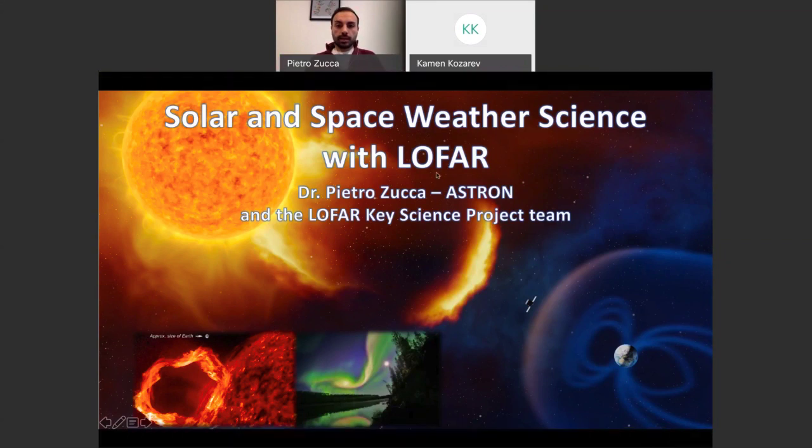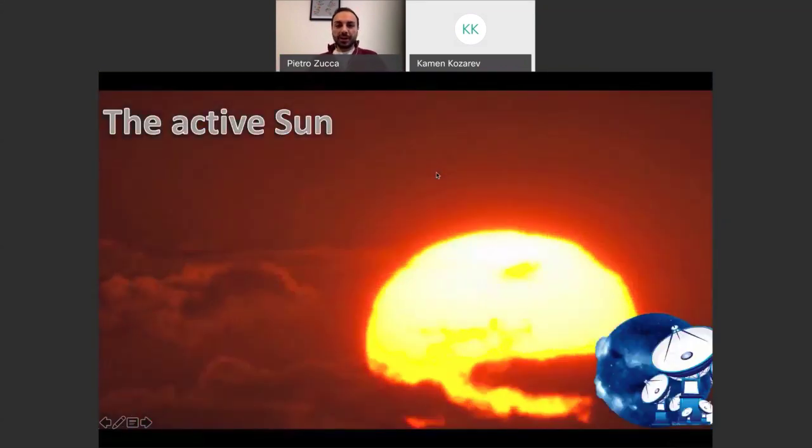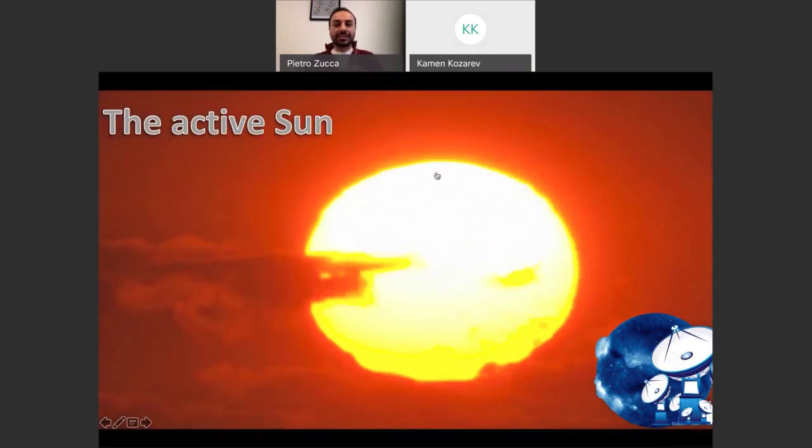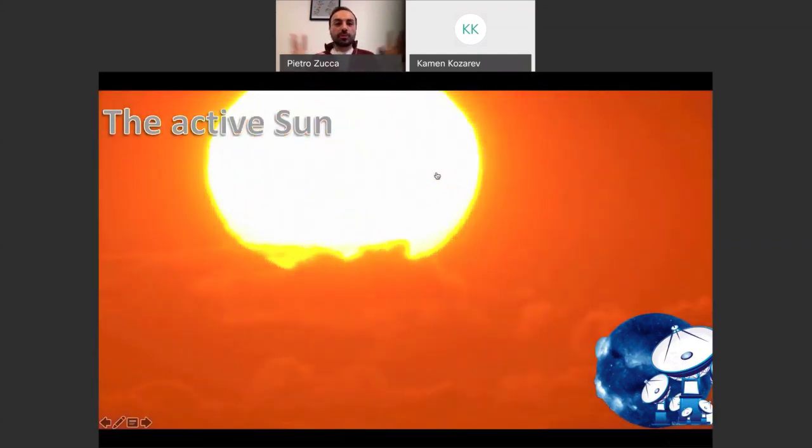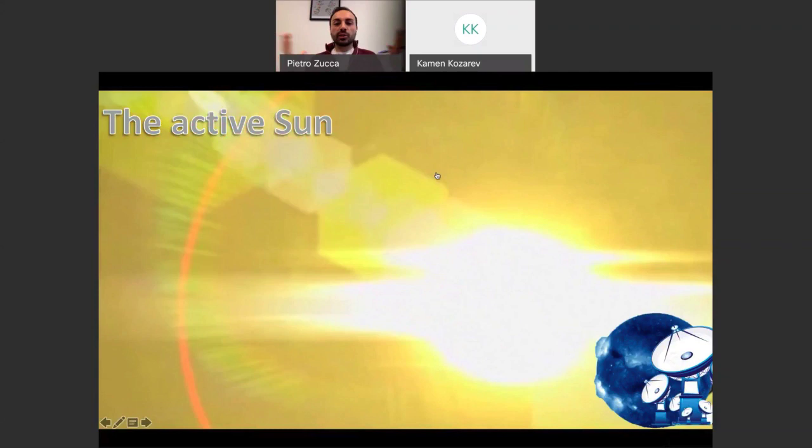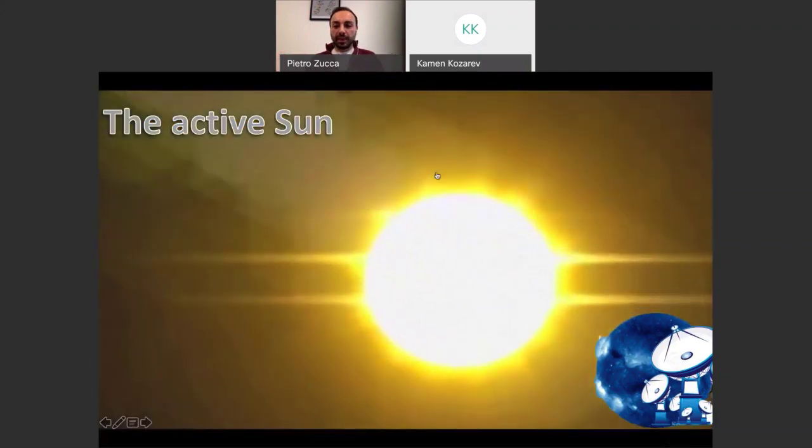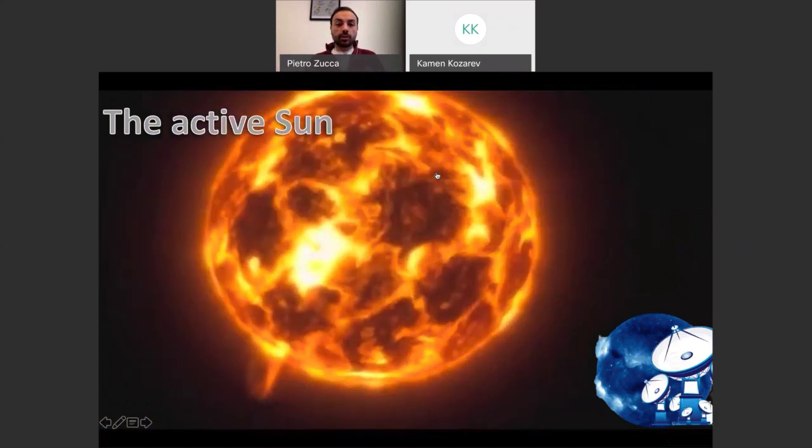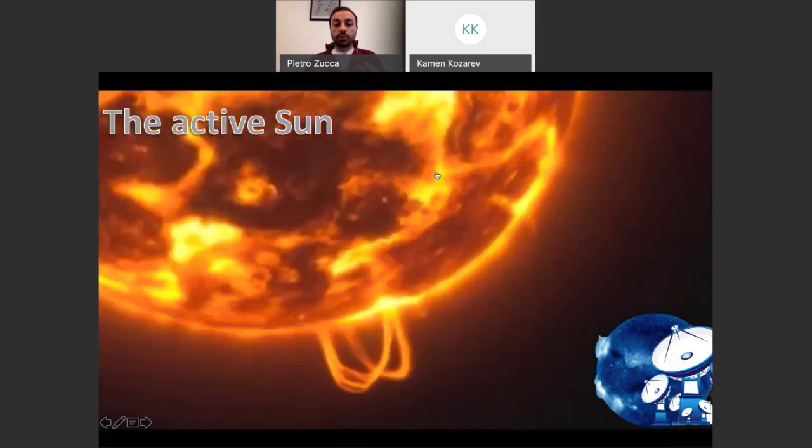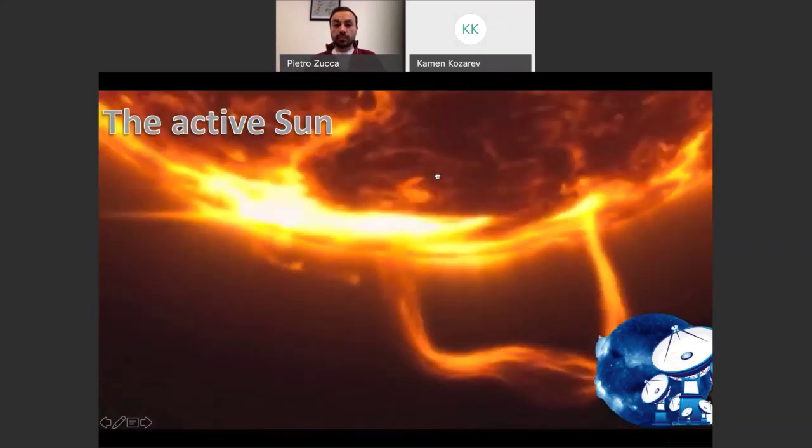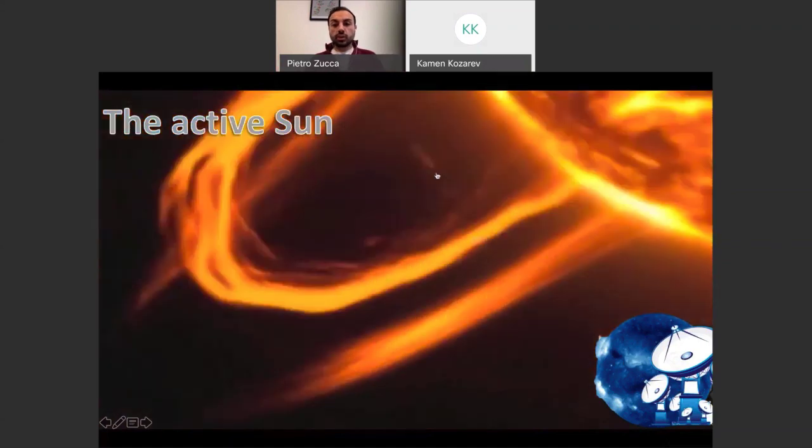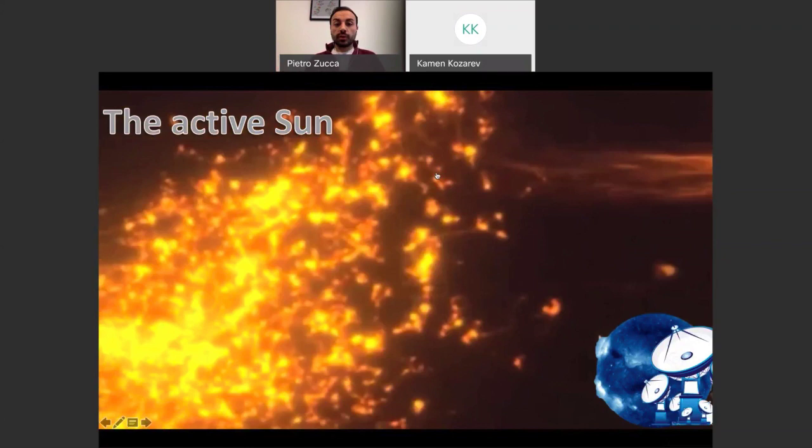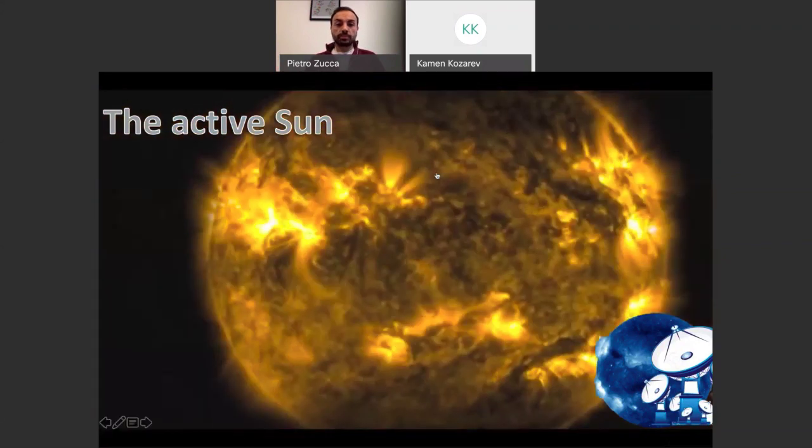You can see the animation, this is the sun. When we think about the sun, we think it's all yellow and smooth, nothing is happening really. But in reality, a lot of activity is happening on the sun. We can see darker regions and brighter regions, we can see in the solar atmosphere a lot of explosions or eruptions happening.